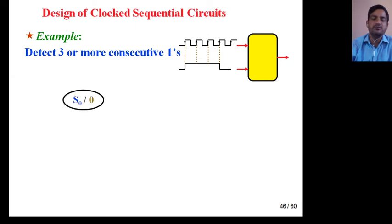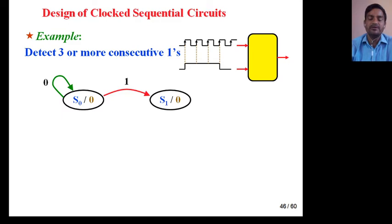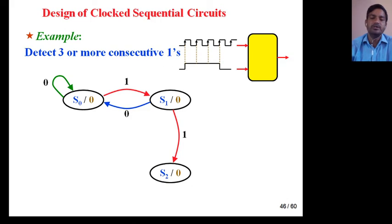For this, suppose we have four states: S0, S1, S2, and S3. S0 is the initial state — when x equals 0, no sequence is detected, so output is 0. When x equals 1, it goes to state S1, but output is still 0 because we have not yet detected three or more consecutive ones. At x equals 0 it returns to S0; at x equals 1 it moves to S2, with output still 0.